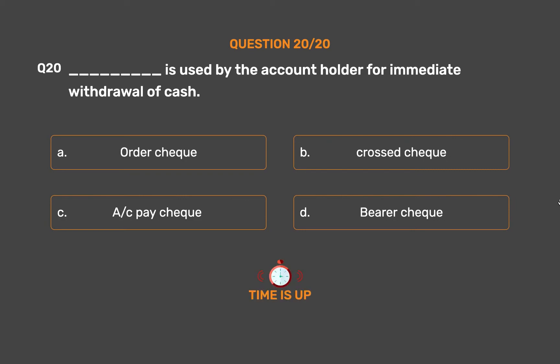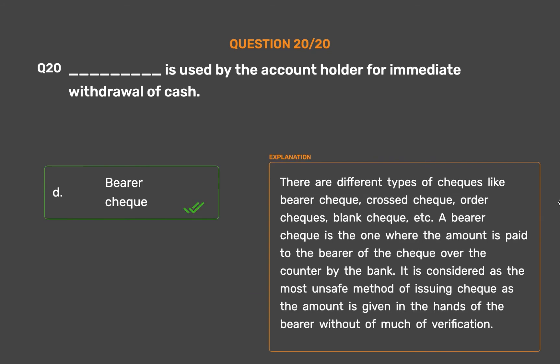The correct answer is option D: bearer check. There are different types of checks — bearer check, crossed check, order check, blank check, etc. A bearer check is one where the amount is paid to the bearer of the check over the counter by the bank. It is considered the most unsafe method of issuing a check, as the amount is given to the bearer without much verification.